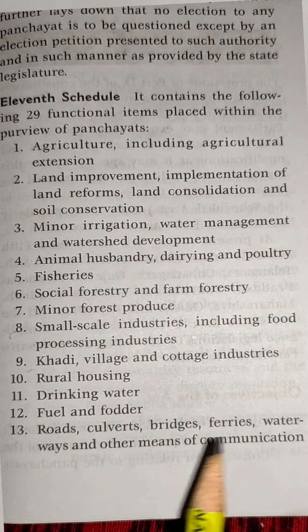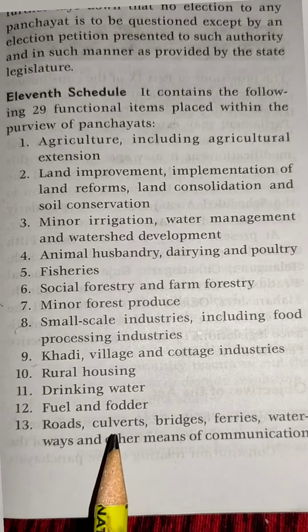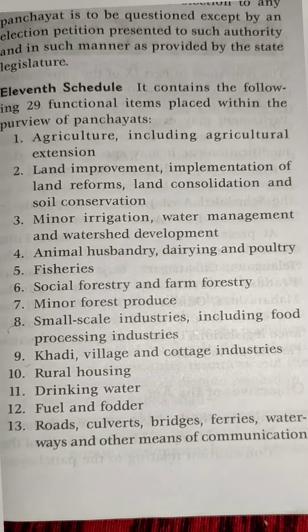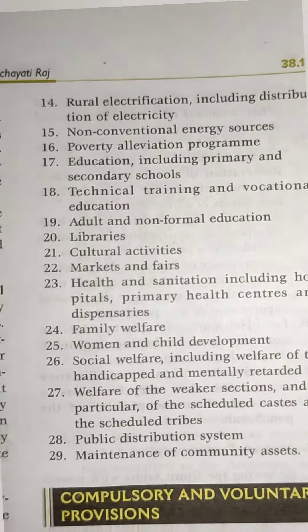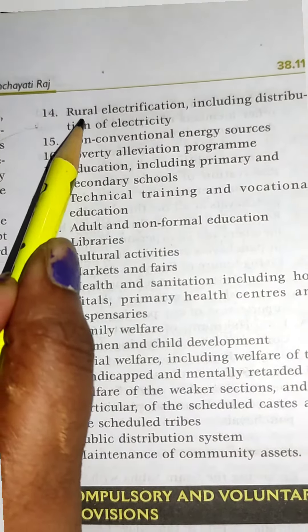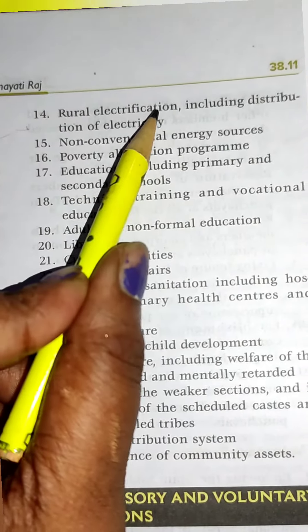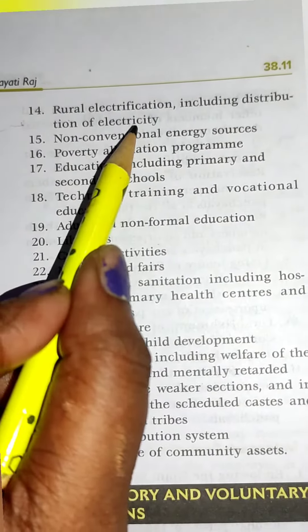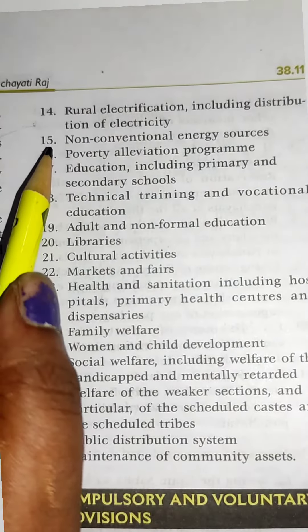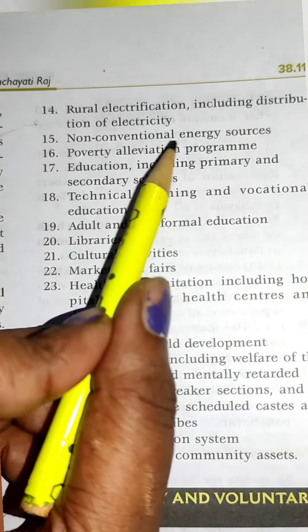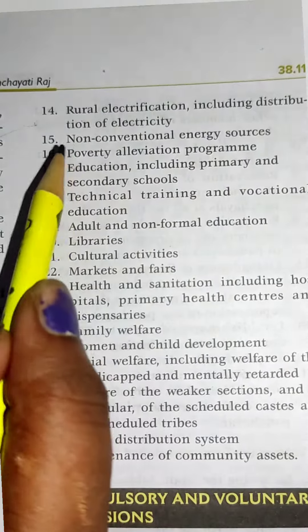Tenth is rural housing. Eleventh is drinking water. Twelfth is fuel and fodder. Thirteenth is roads, culverts, bridges, ferries, waterways and other means of communication. Fourteenth is rural electrification including distribution of electricity. Fifteenth is non-conventional energy sources.